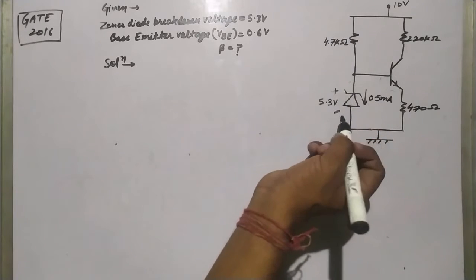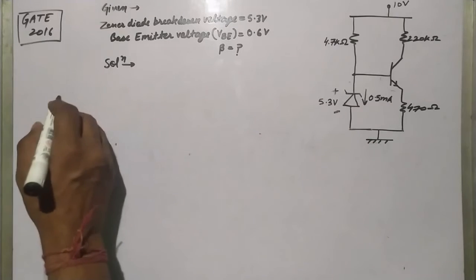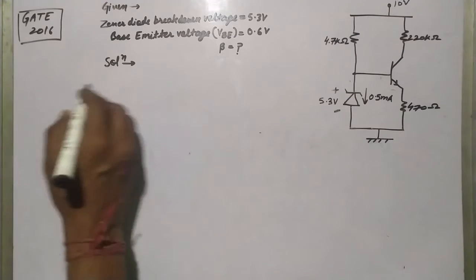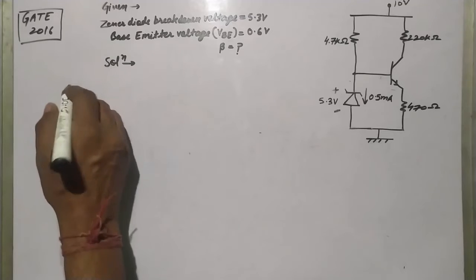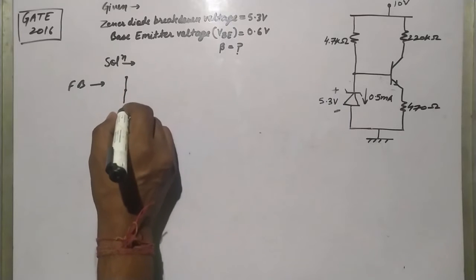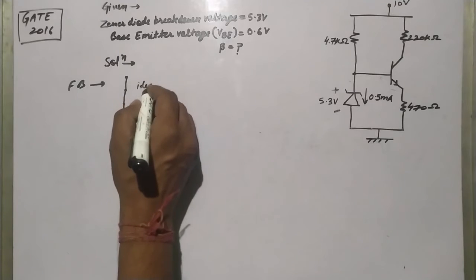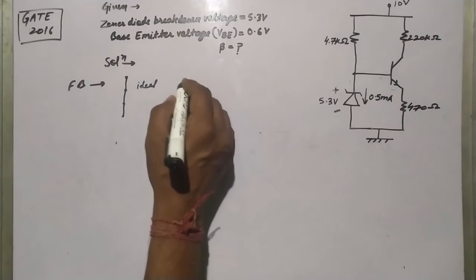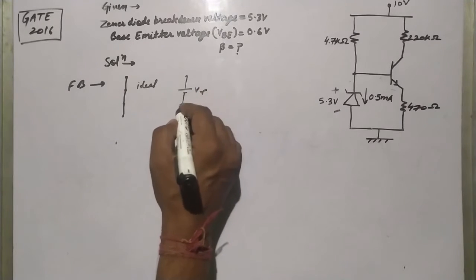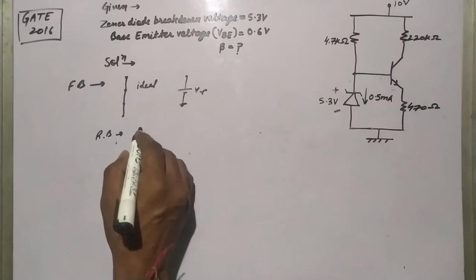We use the Zener diode with another device to utilize its breakdown region. Let's see how the Zener diode works for different biasing conditions. If we are biasing the Zener diode in forward bias, it will give a short circuit if the diode is ideal. If it is not ideal, it will conduct at the cut-in voltage. If we are reverse biasing the Zener diode, it will be open circuit.